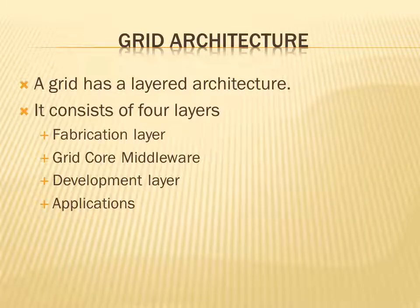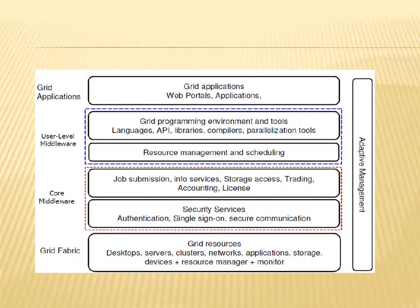The grid has a layered architecture and usually consists of four layers: the fabrication layer, the grid core middleware, the development layer, and the applications. The lowest level is the grid fabric or fabrication layer, which consists of various resources such as desktops, systems, servers, storage facilities, and networks. This is followed by the core middleware, then the user-level middleware, and finally the applications.